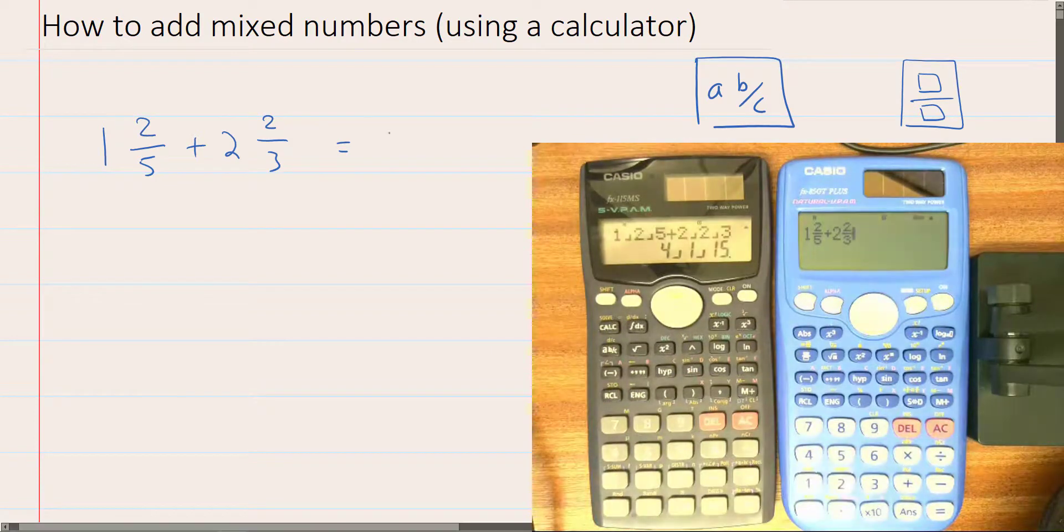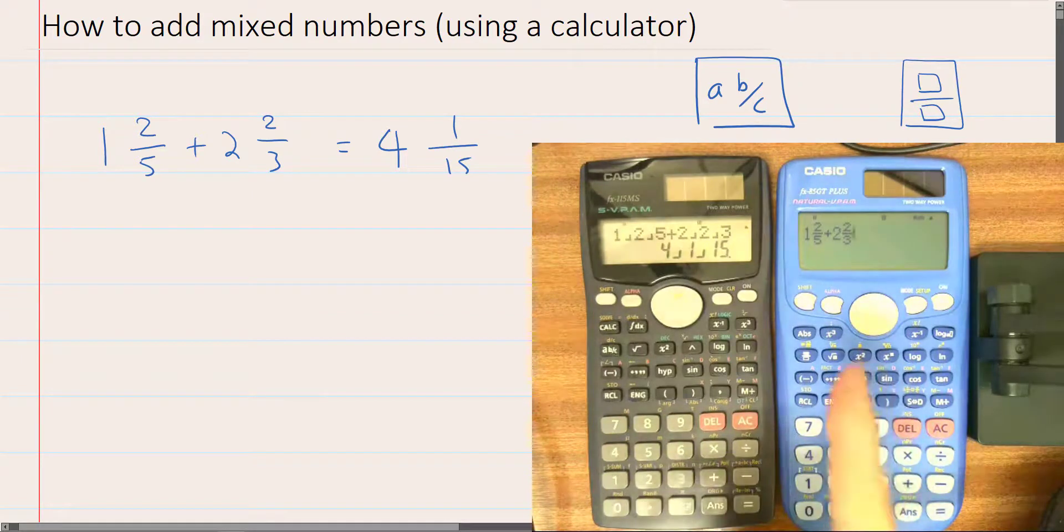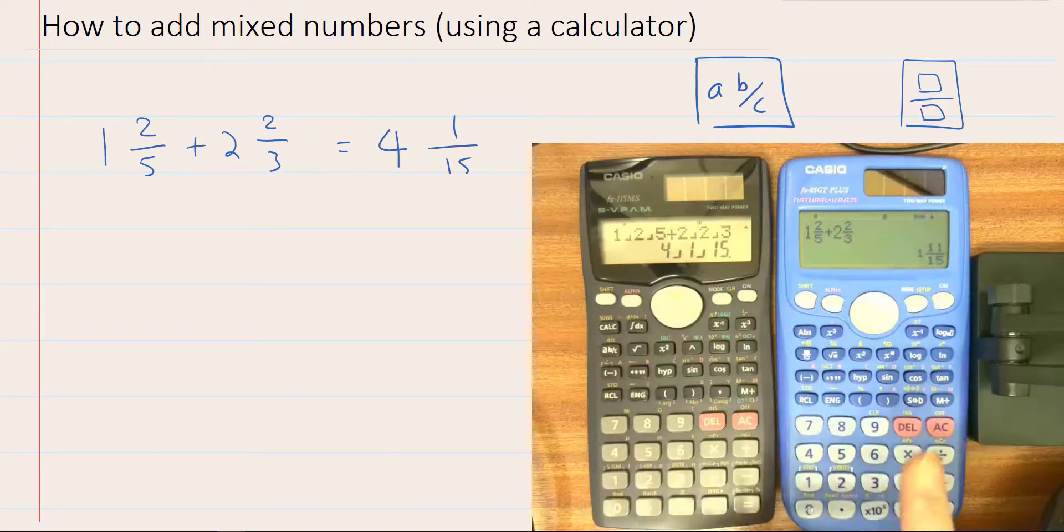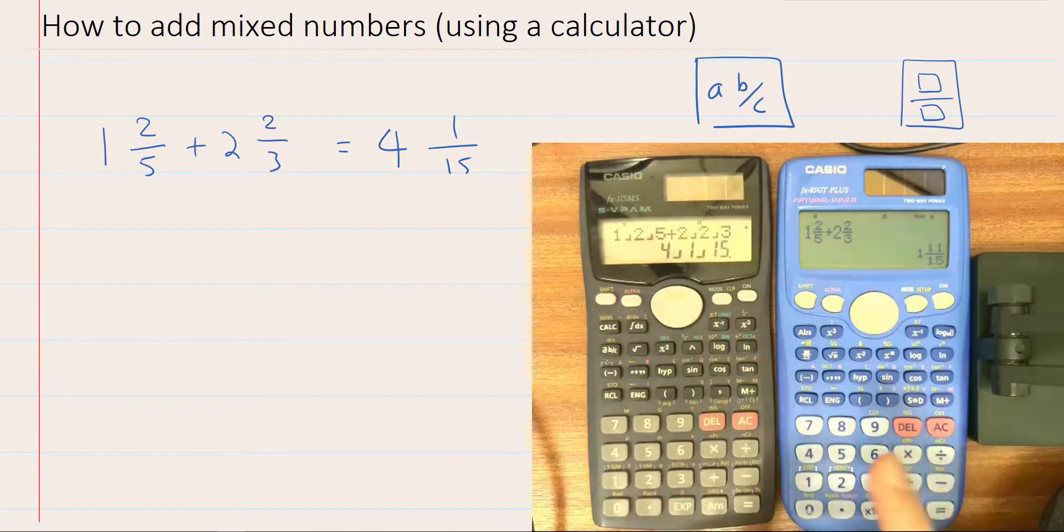The answer is 4 and 1 15th. I'll do that the same on the natural view. Hit equals and what happens? I get 1 and 11 15ths.